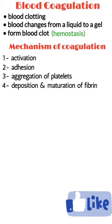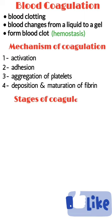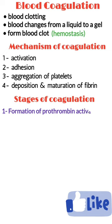Coagulation of blood occurs through a series of reactions in three main stages. Stage 1: Formation of prothrombin activator.